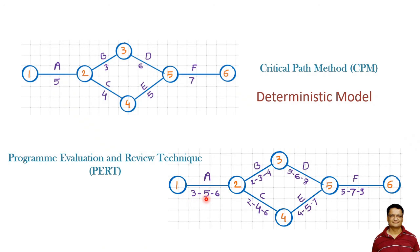But if things go wrong or there are certain issues, this activity may take six days. We are assigning certain probabilities to this activity, and that is why this model becomes probabilistic in nature.